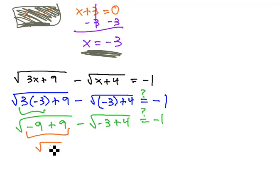Negative 9 and 9 is 0 minus the square root of negative 3 and 4 is 1. Hopefully, that will equal negative 1.